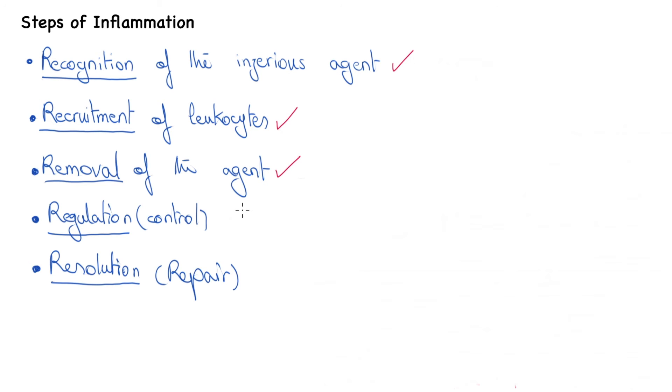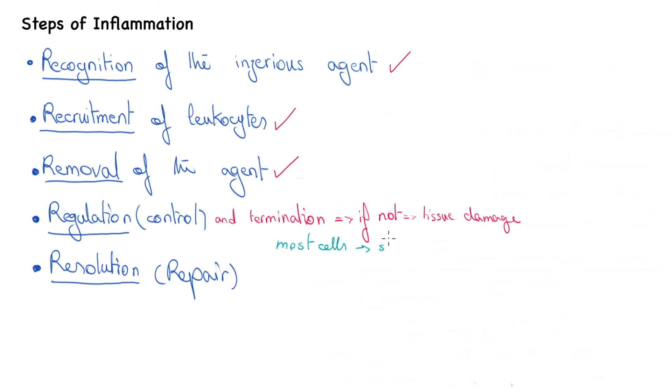The next step is the regulation and termination of the response. Inflammatory response, if not regulated, can have harmful consequences and damage the tissue in the process of removing the offending agent. Most cells involved in inflammation have short half-lives and die by apoptosis within a few hours. The same goes for the mediators, which have short half-lives and decay quickly.